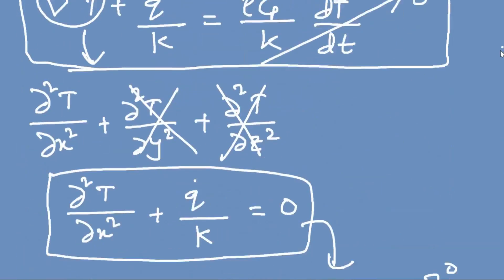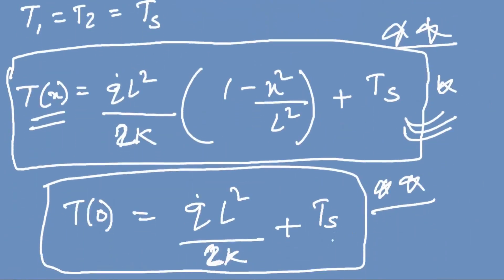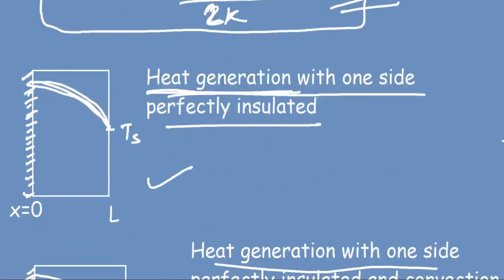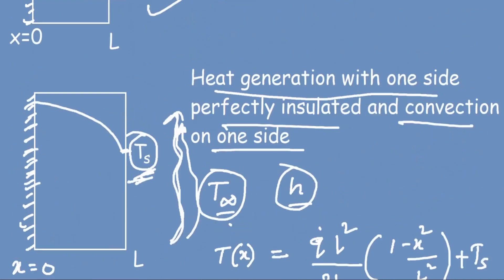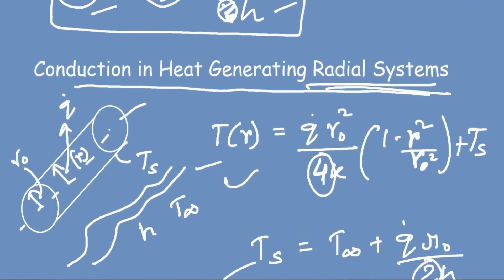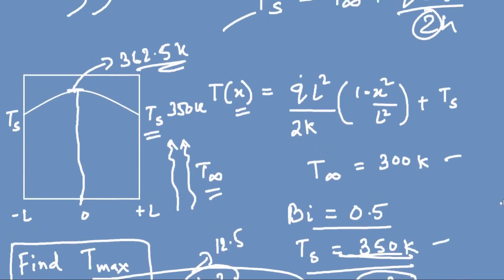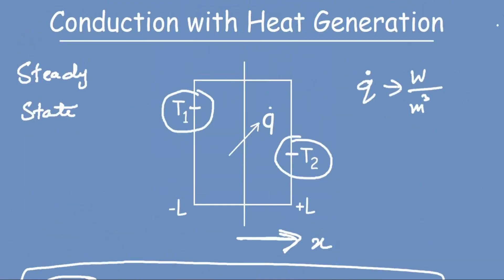The important equations to remember are the temperature profile for the plane wall, the Ts relation involving convection, and the radial system analogues. For radial systems, simply multiply the denominator by 2 compared to the plane wall equations. That is all for this video. Thank you.